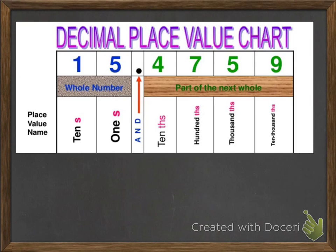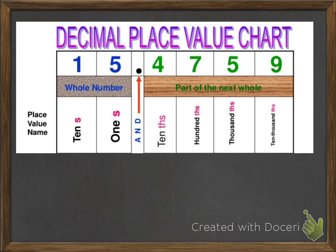We're going to begin with reviewing decimal place value. For this class, the highest decimal place value that you really need is to go to the ten-thousandths — that's four spots that come after the decimal point. I want you to start with always finding the decimal point. Any time that you read a decimal within a number, you're not really supposed to say "point."